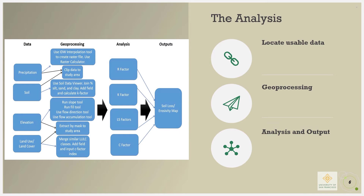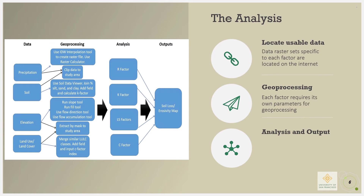For our analysis, usable raster datasets specific to each factor were first located. A layer was then generated for each of the Revised Universal Soil Loss Equation variables, and each variable requires its own parameters for geoprocessing. Soil erosion risk was then calculated in ArcGIS on a pixel-by-pixel basis by combining the five factors through the use of the raster calculator tool. The final map shows the area with high or low soil erosion risk.